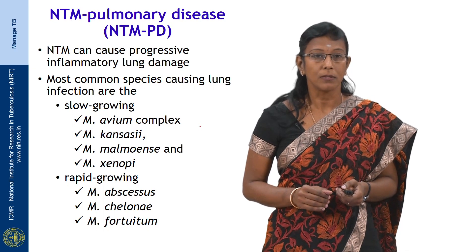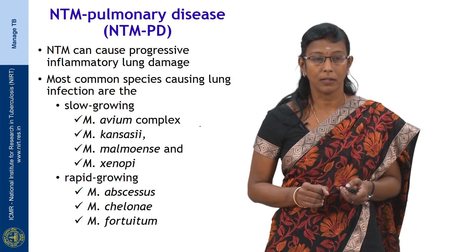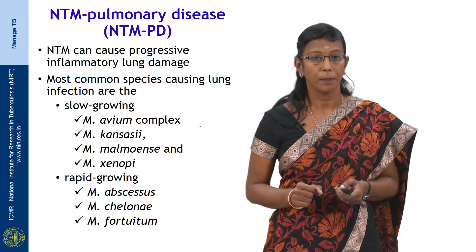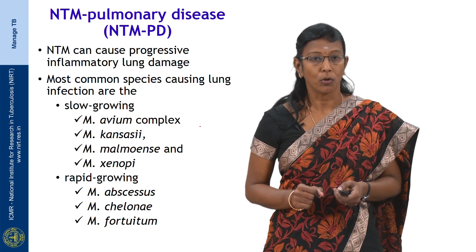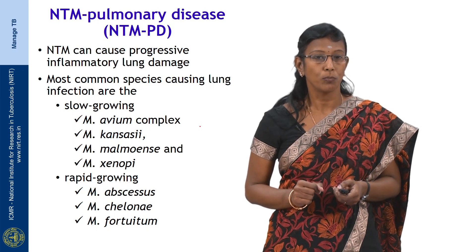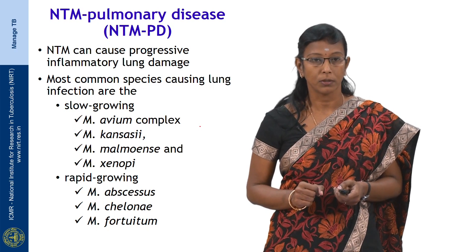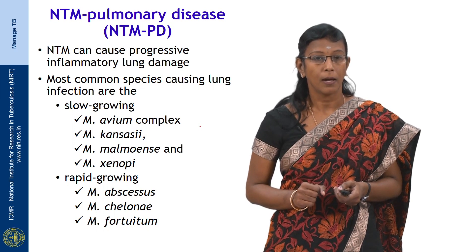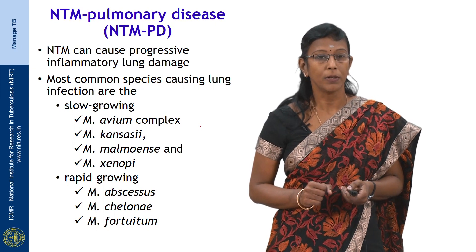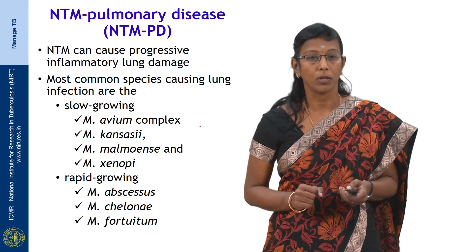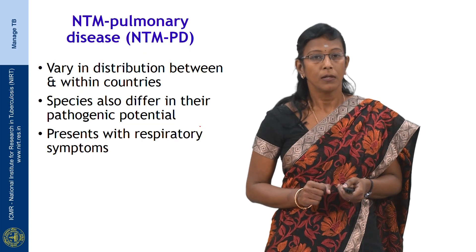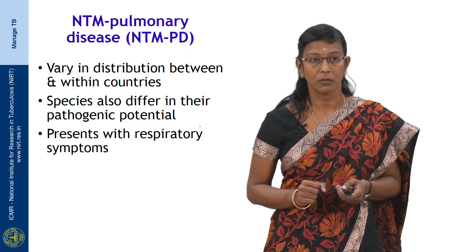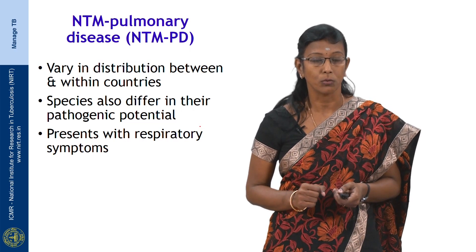Since NTM pulmonary disease has a major impact on public health, I would like to discuss it in the next few slides. NTM can cause progressive inflammatory lung damage due to both slow-growing and rapid growers. Among the slow growers of clinical importance are MAC complex, M. kansasii, and M. xenopi; among the rapid growers, M. abscessus, M. chelonae, and M. fortuitum. These vary in distribution not only between countries but also within countries.